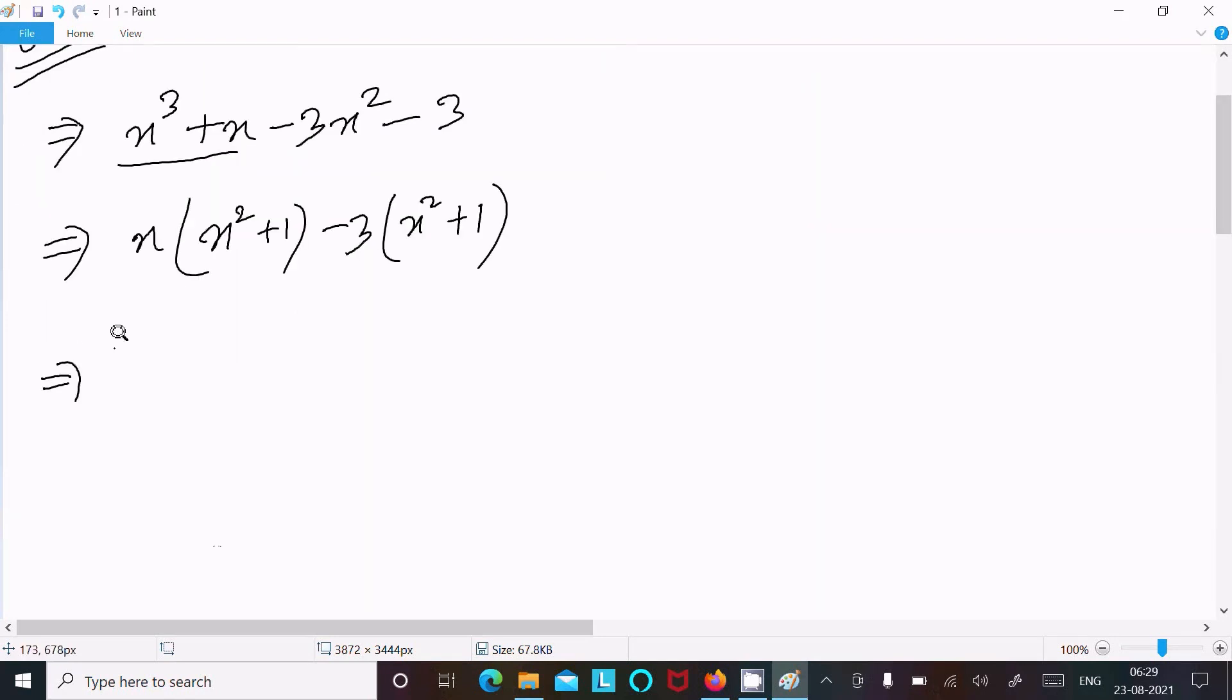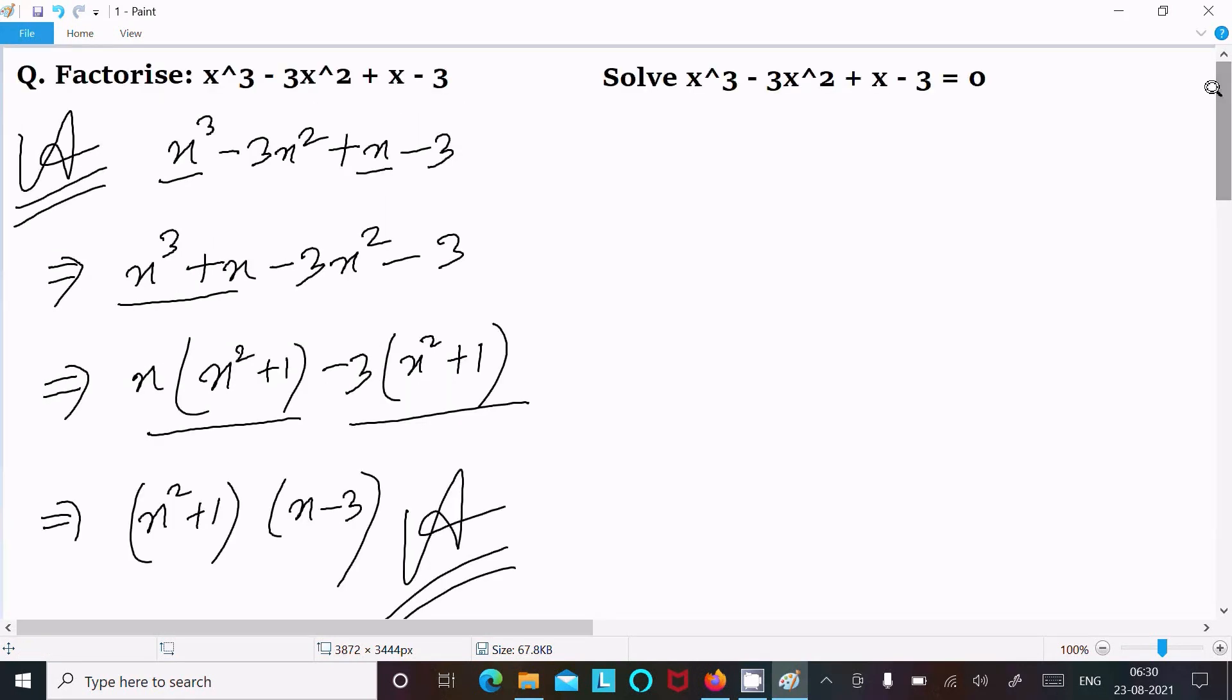After that, between these two x² + 1 is common. Now here (x² + 1)(x - 3). So this is the factorization. So this is the answer of this factorization of this equation.